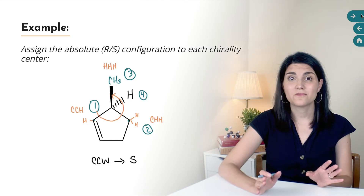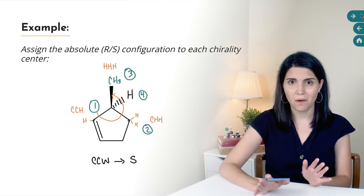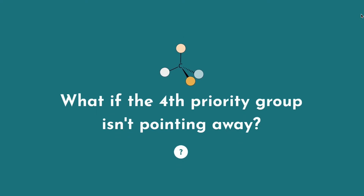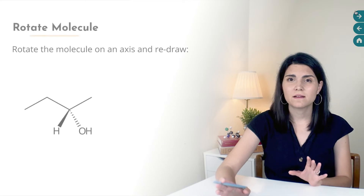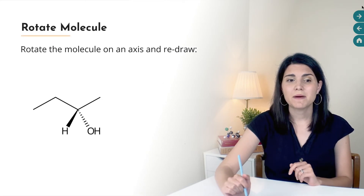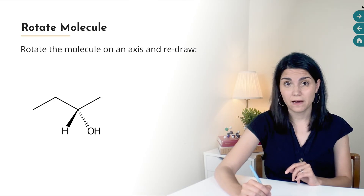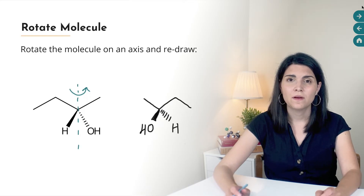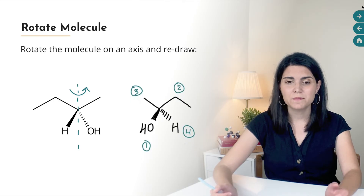You need strategies for when the fourth priority group isn't on a dashed bond. One option — recommended only for simple molecules — is to imagine rotating the molecule to put the fourth priority group in the back. For example, draw an axis through the chirality center and do a 180-degree rotation, which switches the methyl and ethyl groups and brings the hydrogen to the back and the OH to the front. Then rank the remaining groups: OH is 1, ethyl is 2, methyl is 3, giving the S configuration.